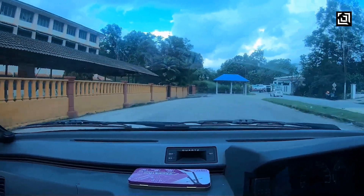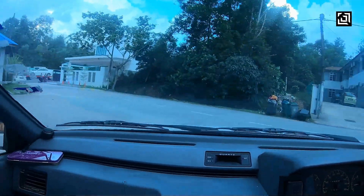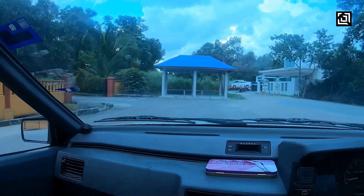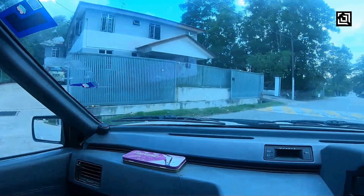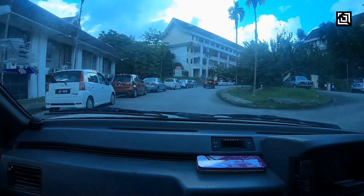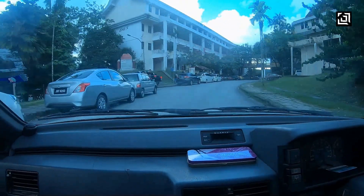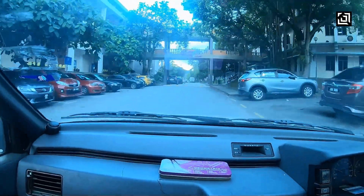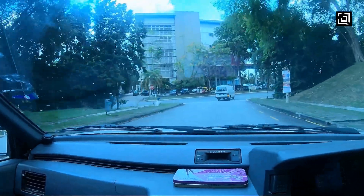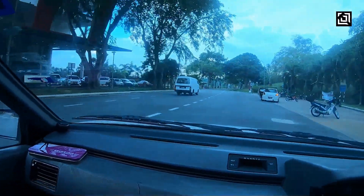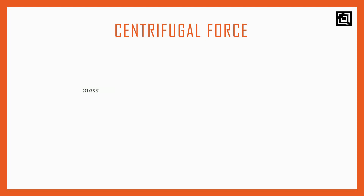First, we apply the velocity at the same time and observe the effect. Now if we look at the velocity, we can see how it changes the centrifugal force. Next, let's look at the radius of rotation and centrifugal force. When the radius of rotation is less, the centrifugal force is greater. So the centrifugal force depends on mass, velocity, and radius together.